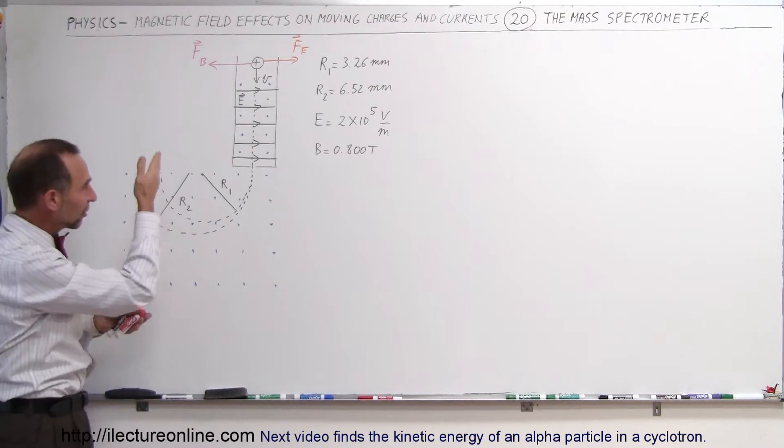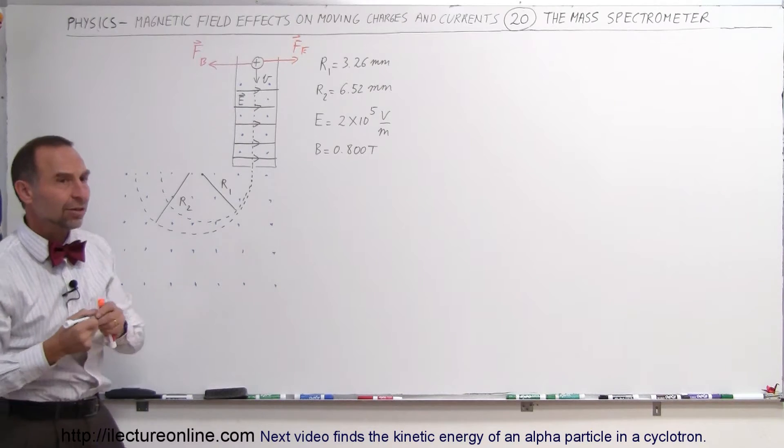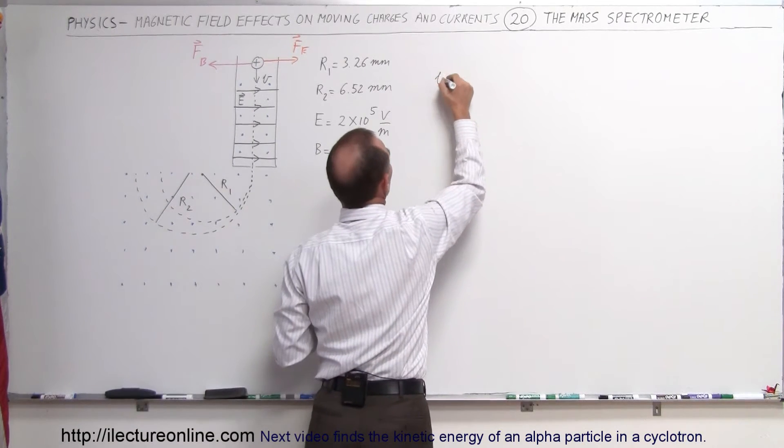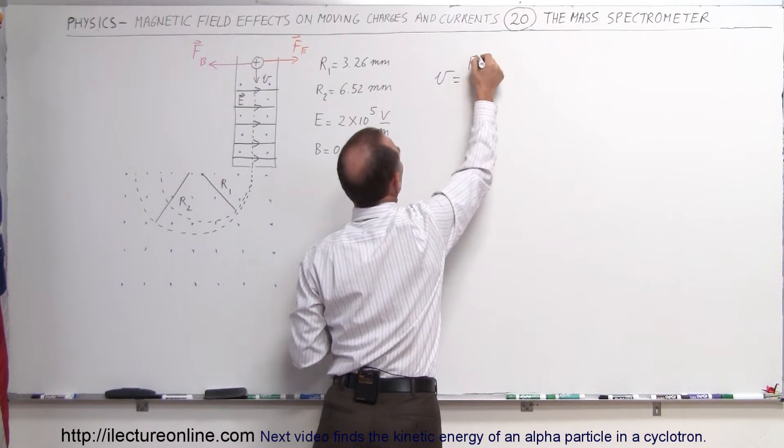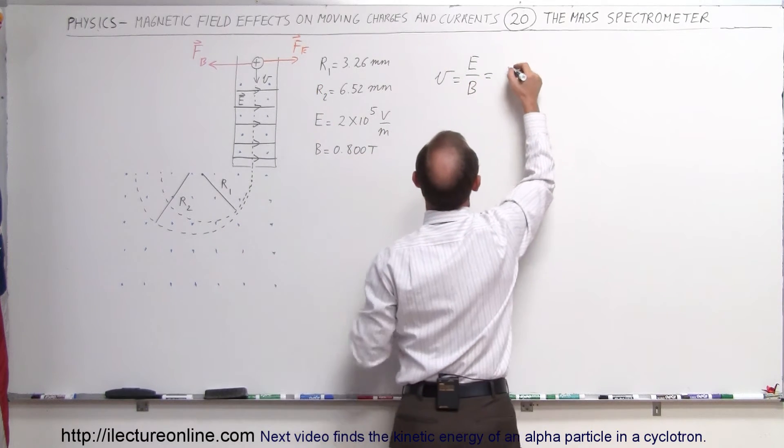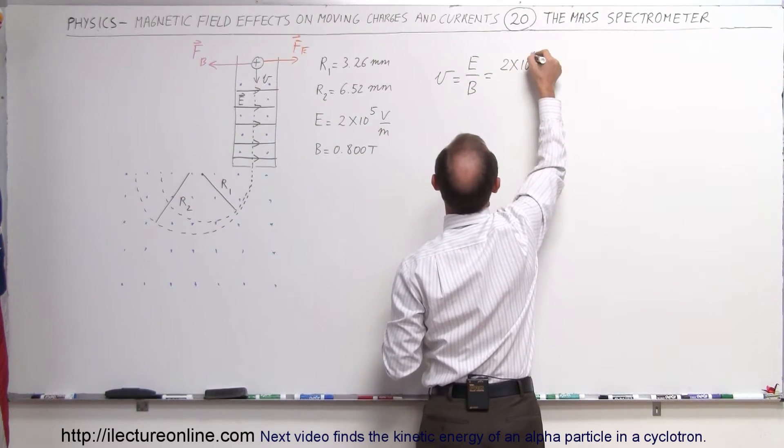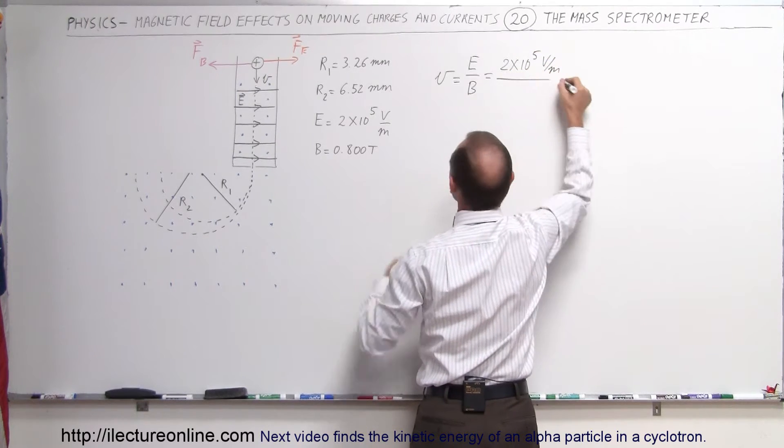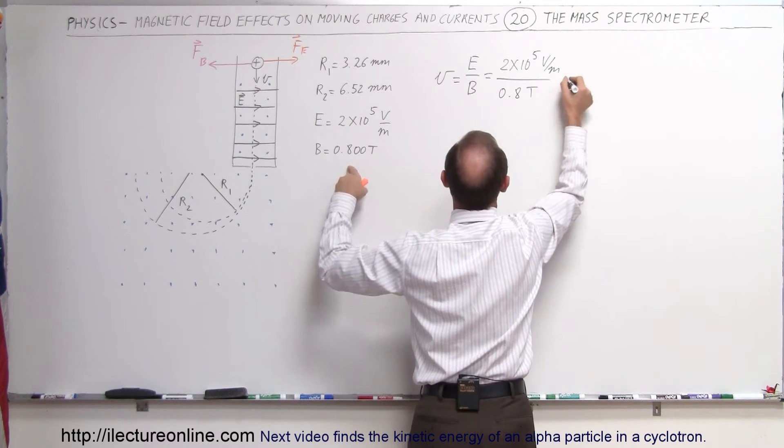How do we find the velocity of the particles as they come through the velocity selector? Turns out that the velocity is equal to the ratio of the electric field divided by the magnetic field. And if the electric field here is 2 times 10 to the fifth volts per meter and the magnetic field is 0.8 teslas.